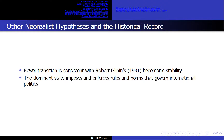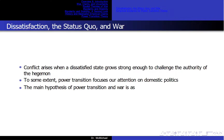Power Transition Theory is consistent with Robert Gilpin's hegemonic stability theory. The dominant state imposes and enforces rules and norms that govern international politics. For example, after World War II, the United States promoted the Bretton Woods Agreement, the current free trade regime, NATO, and the United Nations. Conflict arises when a dissatisfied state grows strong enough to challenge the authority of the hegemon. It is unlikely for the dominant state to allow the challenger to supersede it in power, and a challenger is reluctant to fight before it has sufficient power to win. Contrary to neorealism, power transition argues that rough parity in power promotes conflict, not peace.